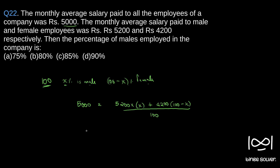Simplifying: 5,000 equals 52x plus 42 times (100 minus x), which gives 52x plus 4,200 minus 42x. So 10x equals 5,000 minus 4,200, which is 800. That gives x equals 80.